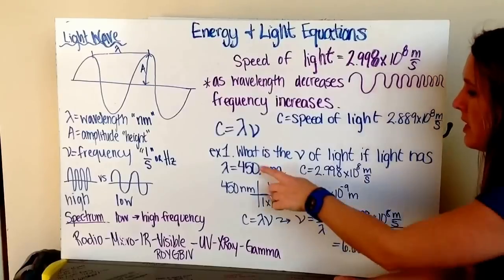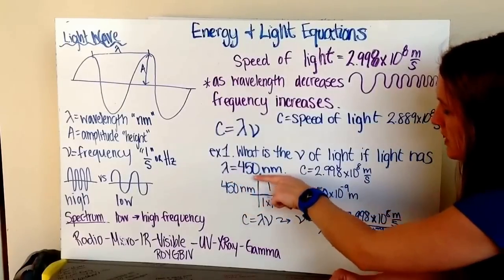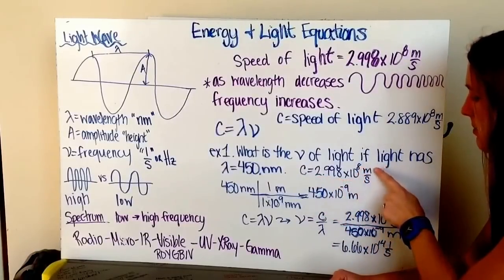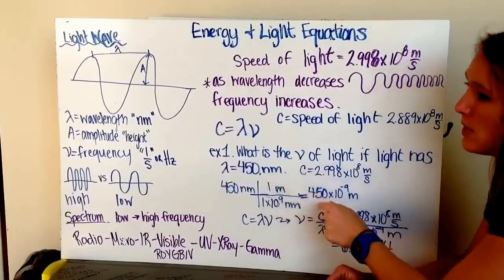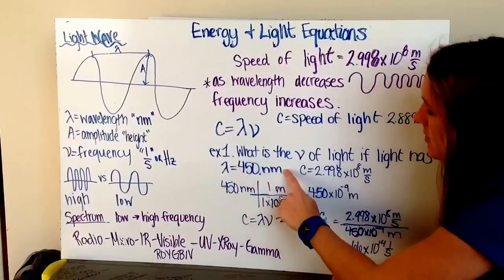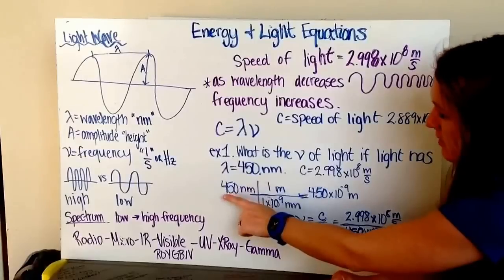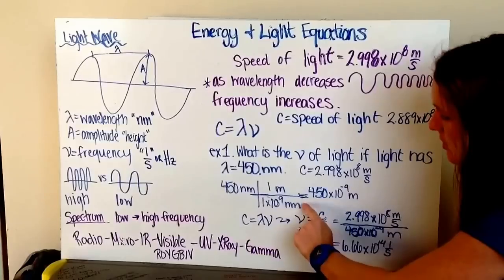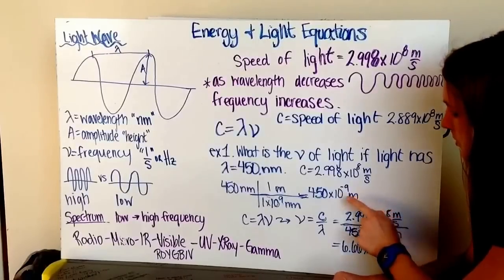An example problem is what is the frequency of light if light has a wavelength equal to 450 nanometers, knowing that our speed of light is 2.998 times 10 to the eighth meters per second. Notice that our light is in meters per second, but our wavelength is in nanometers. We cannot compare meters to nanometers, we need to convert. We convert 450 nanometers using unit cancellation, 1 times 10 to the ninth nanometer per meter, which gives me 450 times 10 to the negative ninth meters.